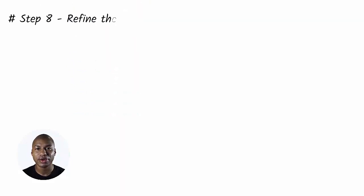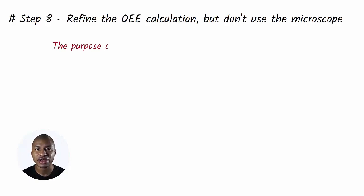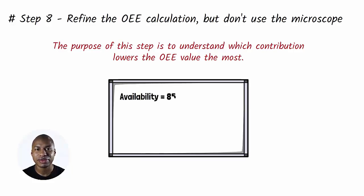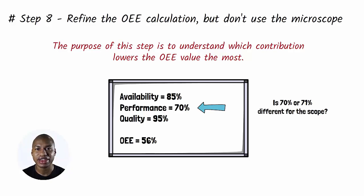Step 8. Refine the OEE calculation, but don't use the microscope. At this point, you should have data and elements to evaluate which of the three components of the OEE. The purpose of this step is to understand which contribution lowers the OEE value the most. For example, if after a few weeks you have these data: Availability equals 85%, Performance equals 70%, Quality equals 95%, OEE equals 56%. It is clear to you that you must work on performance as a priority to raise the OEE. Would it change the sense if the performance were 71% instead of 70%?